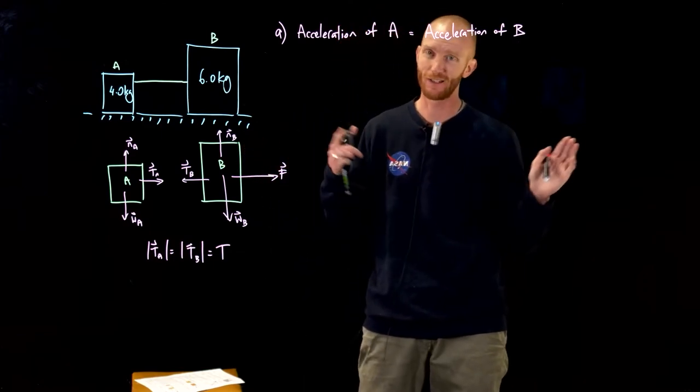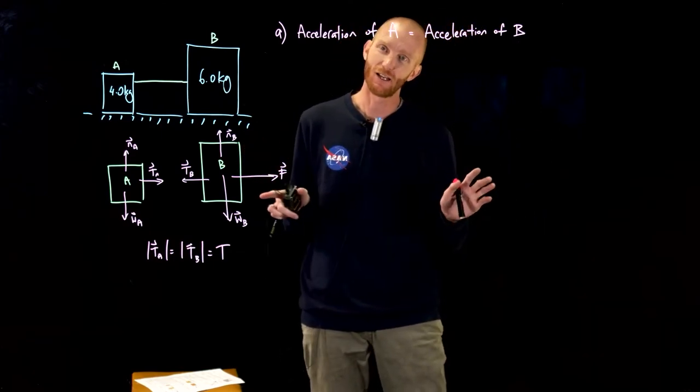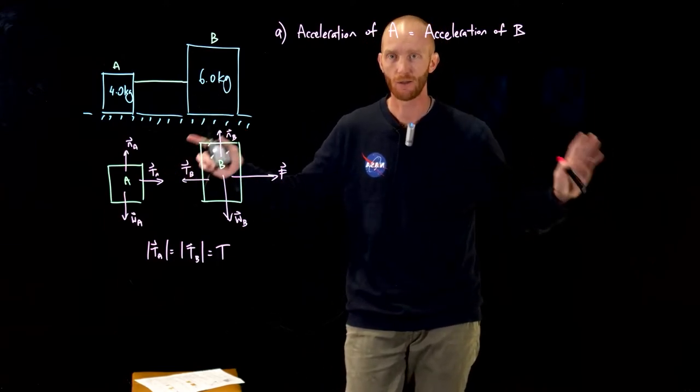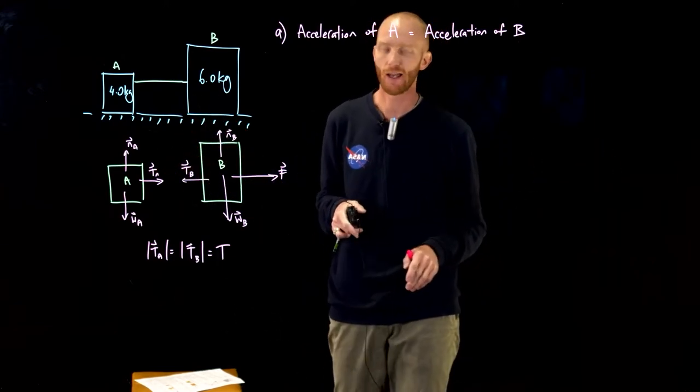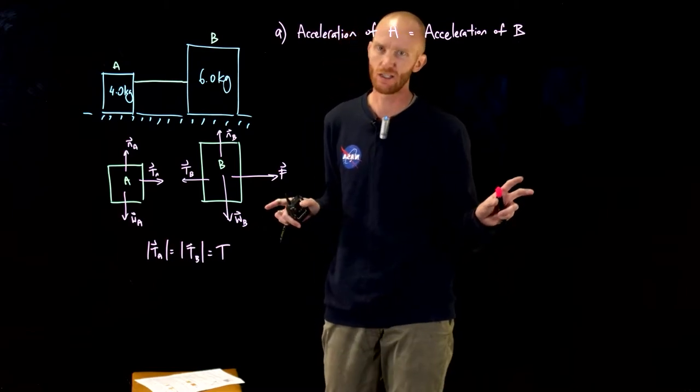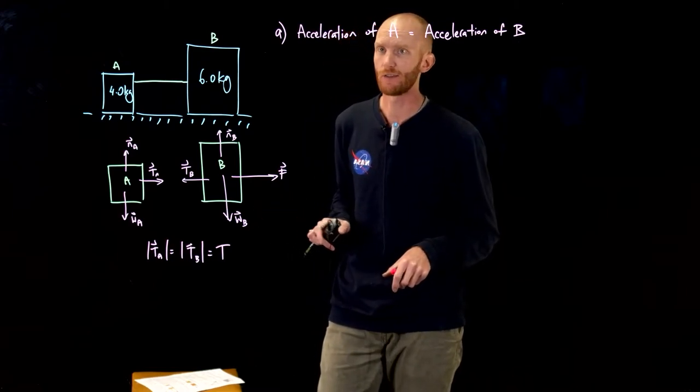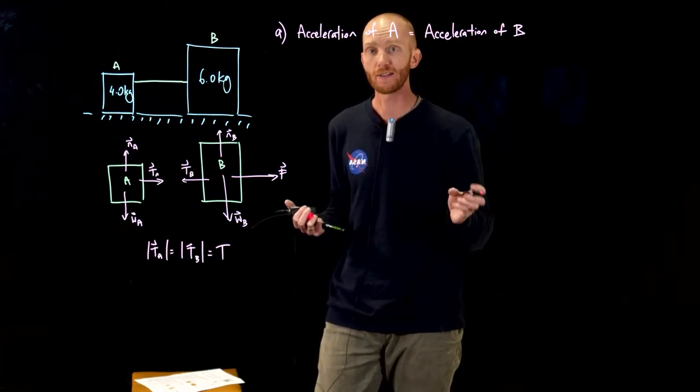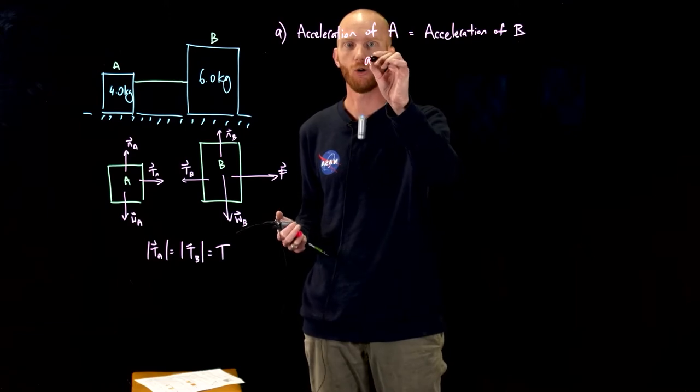If A is accelerating more than B, it's going to crash into B. If A is accelerating less than B, the rope will stretch. We're not considering that because we're not told that's the case. We're told that the string is taut and you can imagine that is definitely what would happen if you started pulling this. So that means that both these things have the same acceleration which we're just going to call A.